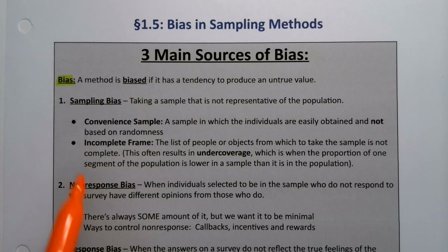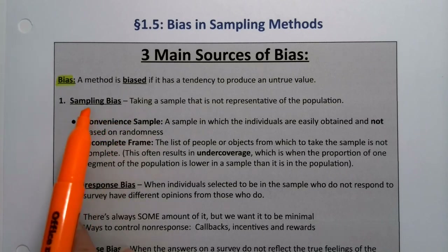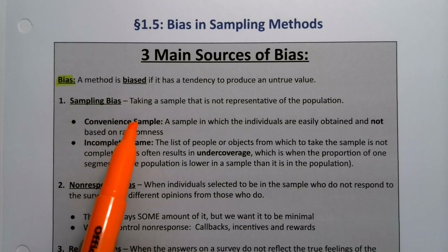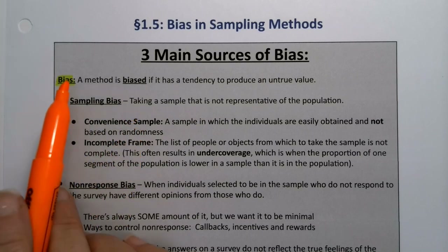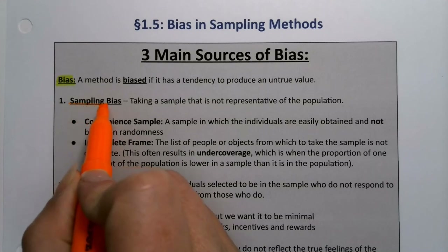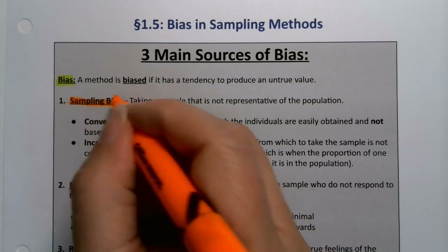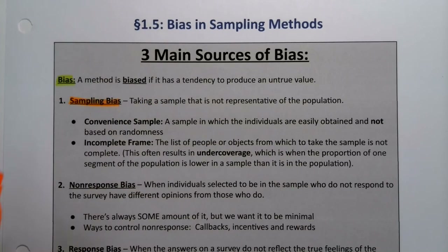There are three main types of bias, and convenient sample is actually only one sub-type within a larger category. So what are the three forms of bias? Well, there's sampling bias — sampling bias means you took a bad sample. Your sample is not representative of your population.